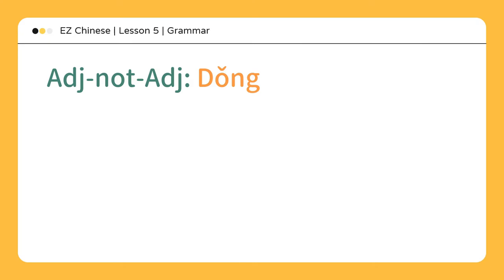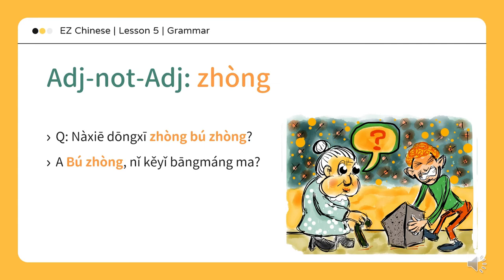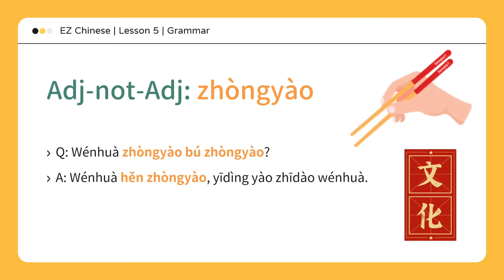懂不懂。 你懂不懂老师说的话？ Do you understand what the teacher said? 我有的懂，有的不懂，你呢？ I understood some and some I didn't — how about you? 那些东西重不重？ Are those things heavy? 不重，你可以帮忙吗？ They aren't heavy — could you help? 文化重要不重要？ Is culture important? 文化很重要，一定要知道文化。 Culture is very important, so you have to know about it.